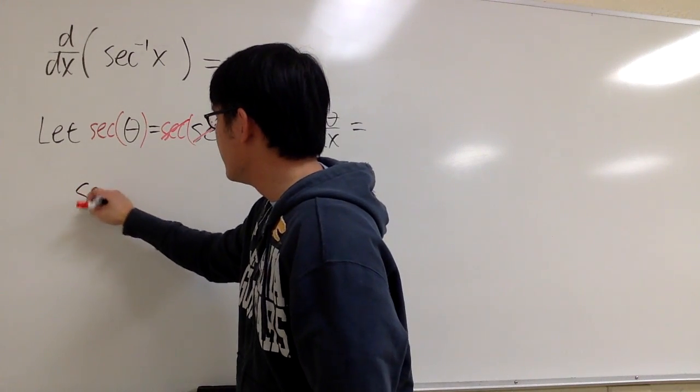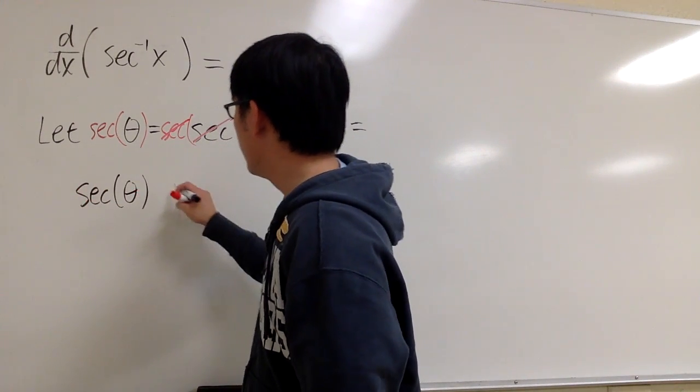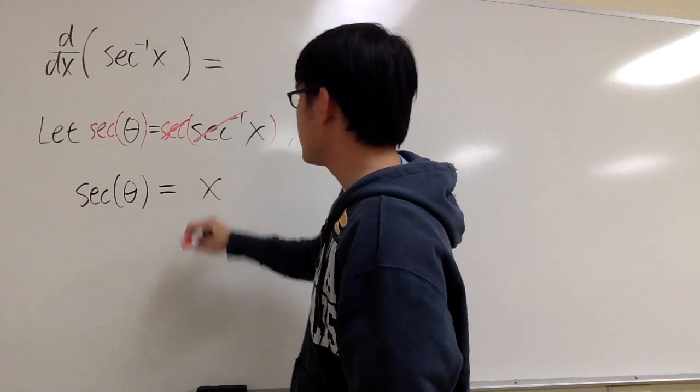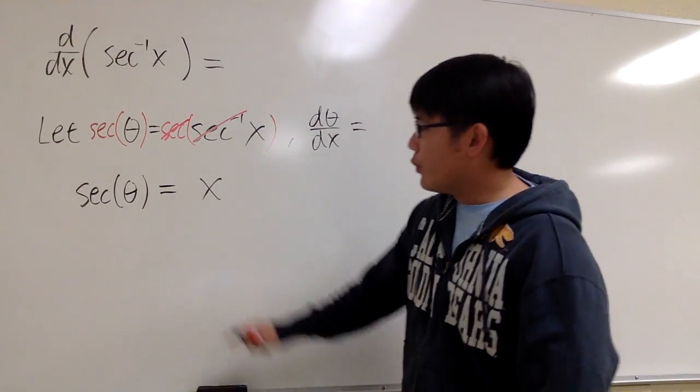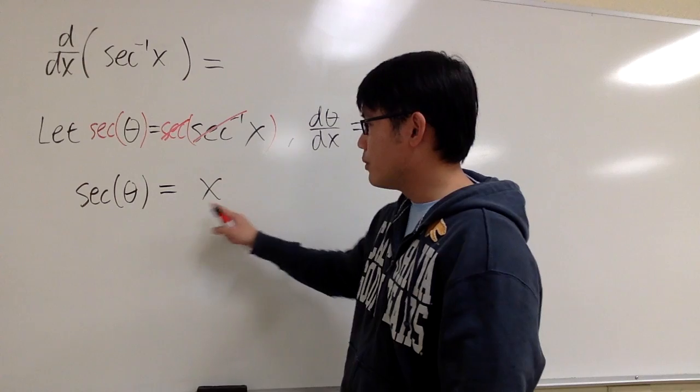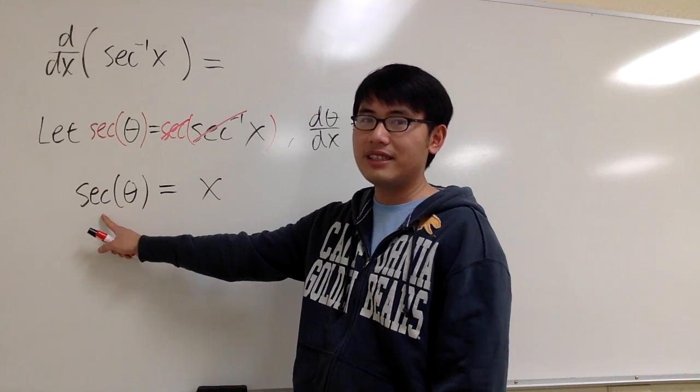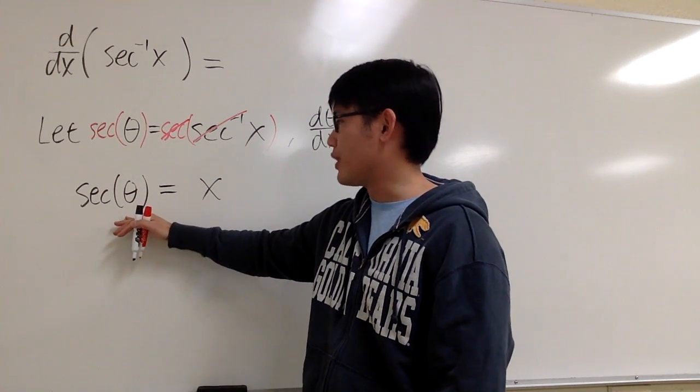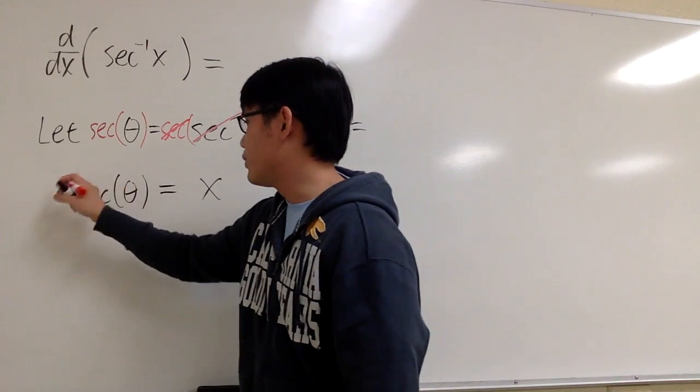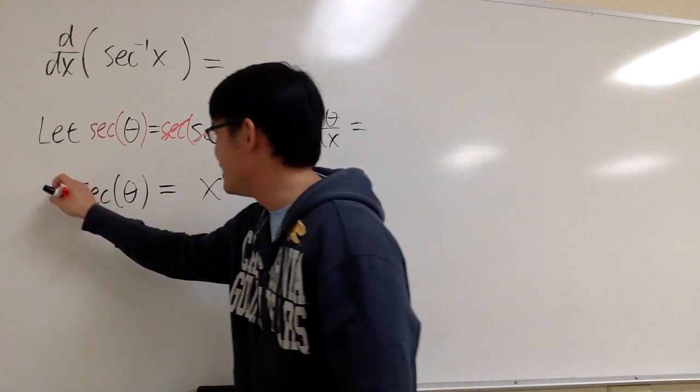Here, we will have secant of theta, and that will be just x. And we can use this equation now because we have the original secant. And then we are going to take the derivative right here, and we can squeeze out the dθ/dx. Let me show you.